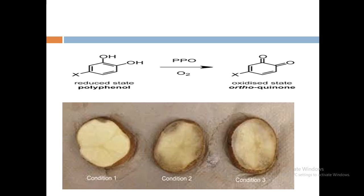Here is the chemical structure. Polyphenol oxidase (PPO), when it reacts with oxygen, turns into ortho-quinone. You can see the picture of the potato which turns from white to brown color. When a half-cut potato is exposed to the outer environment, it starts browning. When left aside for some time it turns partially brown, and when left for much more time it turns completely brown.